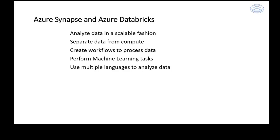Synapse and Databricks were both designed to be cloud-based solutions, only cloud-based, for analyzing and processing data using Spark clusters. Spark is designed to have separate compute from the data, processes data very efficiently by doing massive multi-processing, and scales the work over multiple servers. If your process is running slowly, you can make your clusters bigger to go faster.